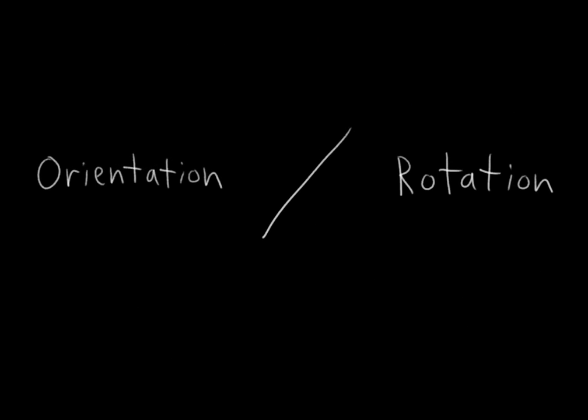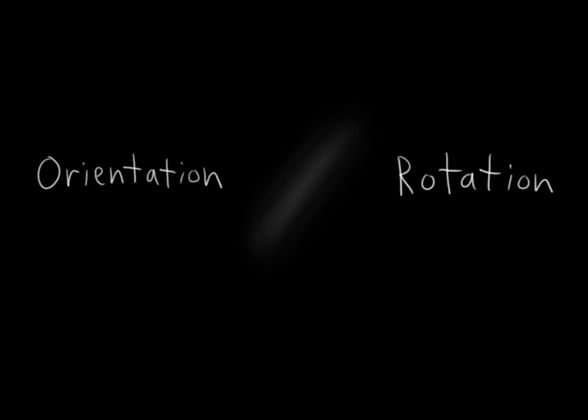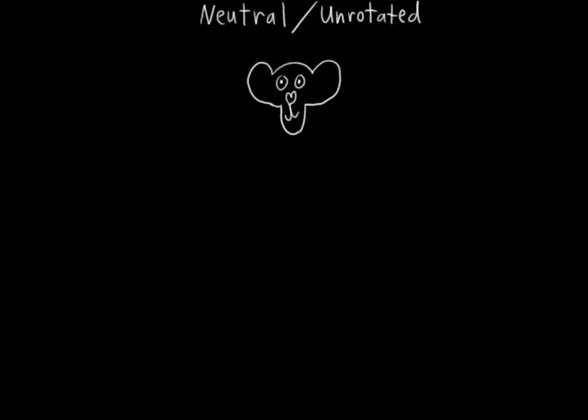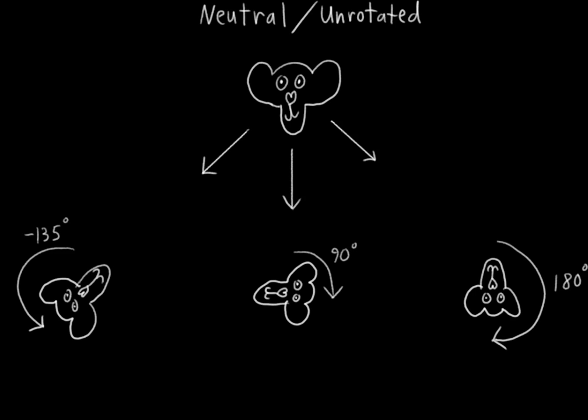In computer animation, this distinction between orientation and rotation often gets blurred, and that's because we typically use rotation to specify orientation. We have a neutral starting orientation that we consider unrotated, and then we specify other orientations by applying different rotations to it.